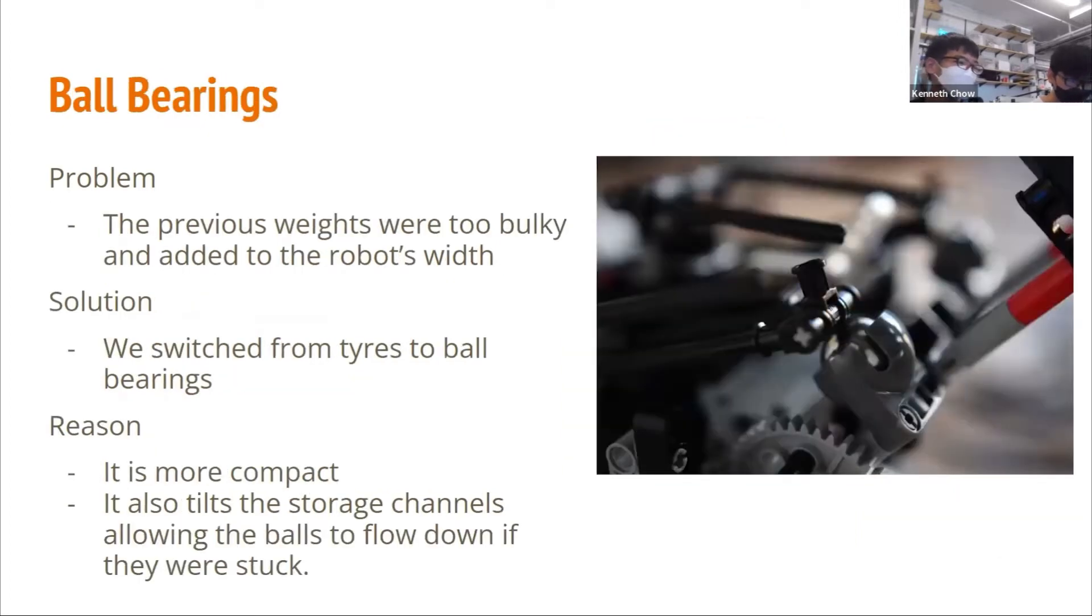Next, we will talk about the weights of the claw. At first, the previous weight was too bulky. This led to excess width of the robot, which was a problem as mentioned in the previous slide. Thus, we shifted from tires to ball bearings. This would tilt the storage channels, allowing the balls to flow down if they were stuck. Moreover, the ball bearings were more compact than wheels.